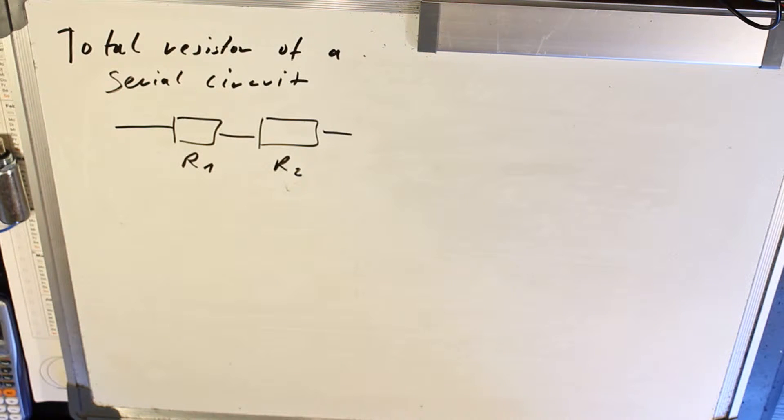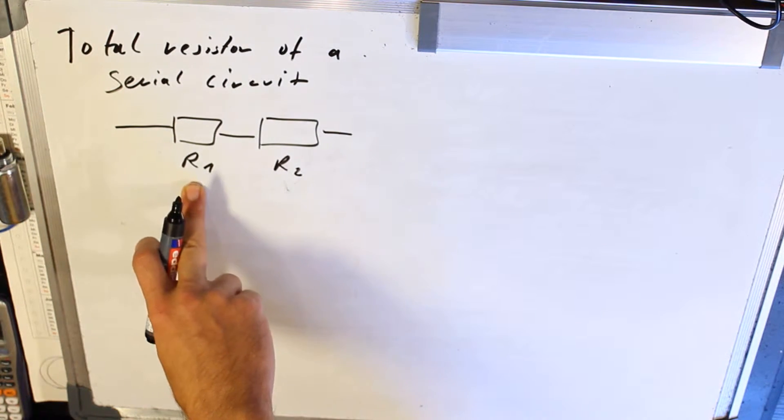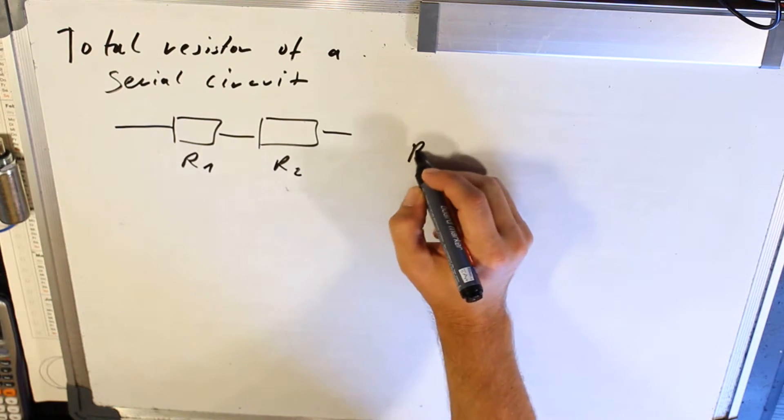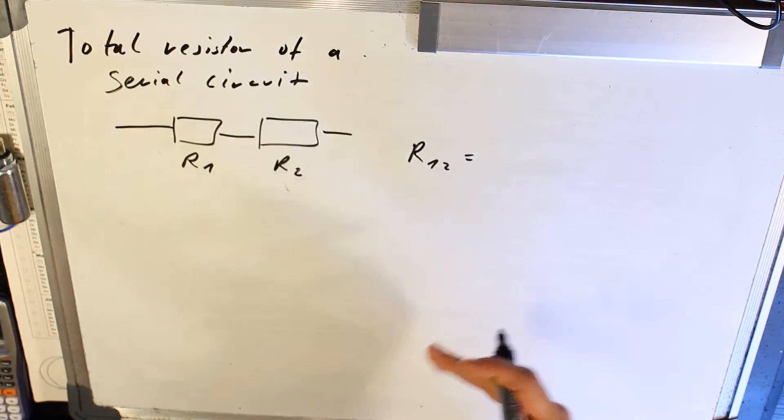Hi guys! Today on electrical engineering: how to calculate the total resistance of a serial circuit. Here there is R1 and R2, and how to calculate R12. And this is very easy.